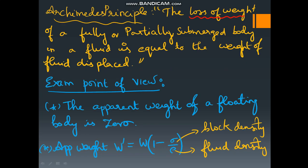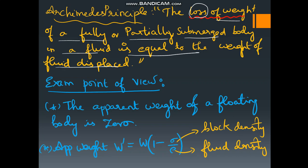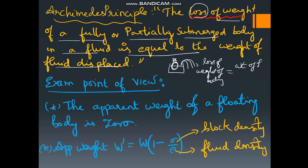In NCERT it is a very small box given, but for the exam you want to know how to apply the formula for different cases. Archimedes principle states that the loss of weight of a fully or partially submerged body in a fluid is equal to the weight of fluid displaced. Suppose there is water here in which you are submerging a body. Due to the submerging body, the water outflows. The loss in weight of this body is equal to the weight of fluid displaced. This is the statement of Archimedes principle.